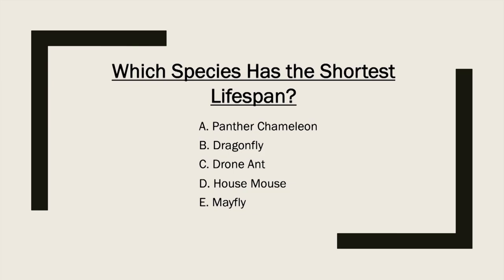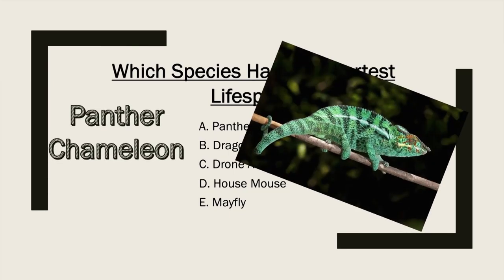All right, let's check it out. First up, we have the panther chameleon. While it's known for its ability to change color and blend into its environment, did you know that panther chameleons only have a lifespan of one year? Panther chameleons have the shortest lifespan among reptiles in the chameleon family. They're native to northern and eastern parts of Madagascar and show rapid mating behavior because of their short lifespan. Interestingly, the entire generation of adult chameleons disappears before the next generation emerges from its eggs. But it doesn't mean the chameleon has the shortest lifespan.